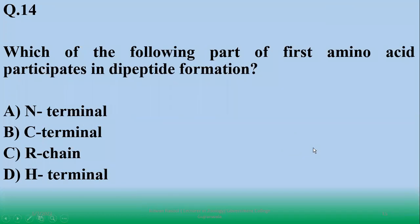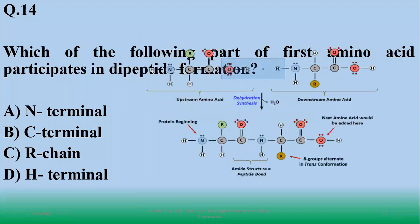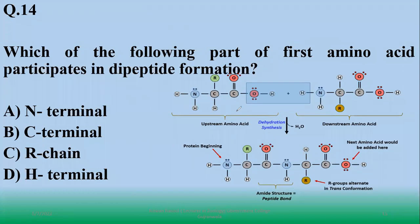Which of the following part of first amino acid participates in dipeptide formation? Translation ki direction hoti hai N-terminal to C-terminal, that is first amino acid ka carboxy terminal participate karega. As you can see upstream amino acid and downstream amino acid, so translation ki direction hamesha hoti hai amino terminal se carboxylic terminal ki jane. So right option is B, C-terminal.